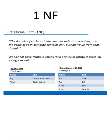First Normal Form should not contain any multiple values in a single attribute or any single row. We cannot have multiple values for a particular attribute.